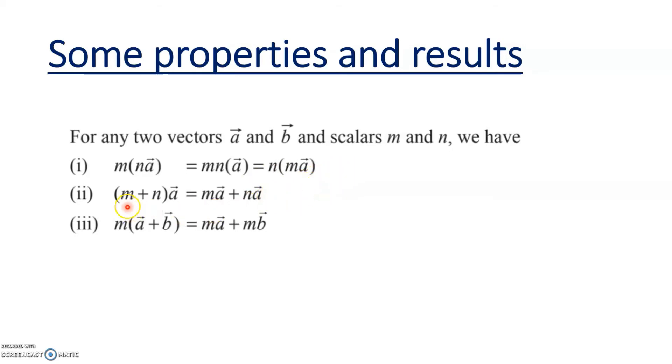The second is (m+n)·a = m·a + n·a. And the last, scalar multiple m·(a+b) equals m·a + m·b.